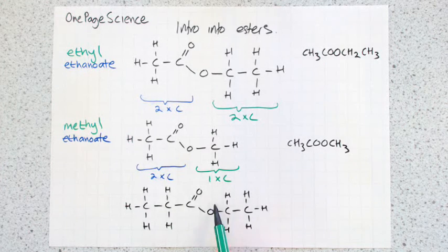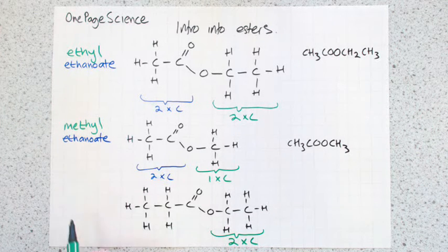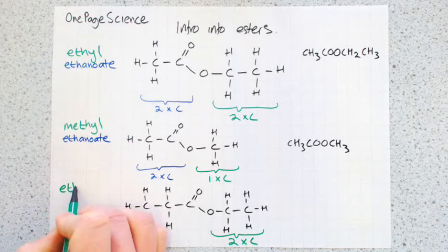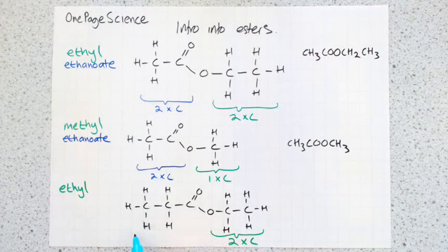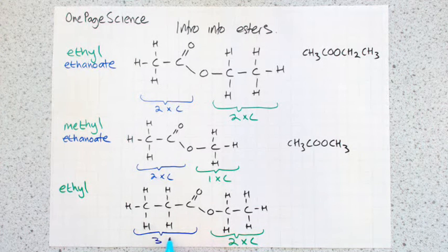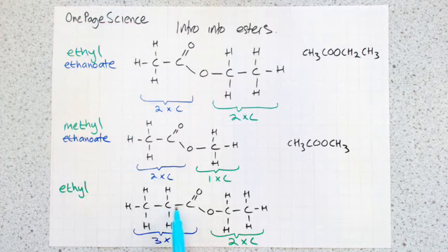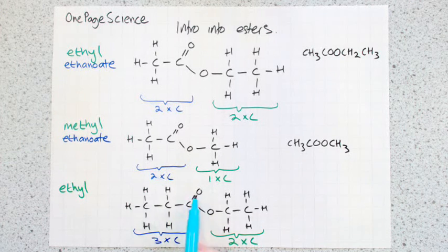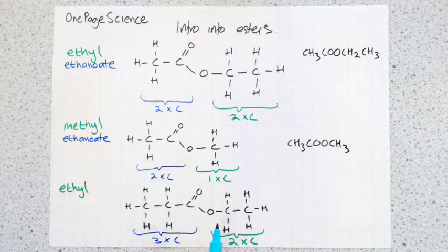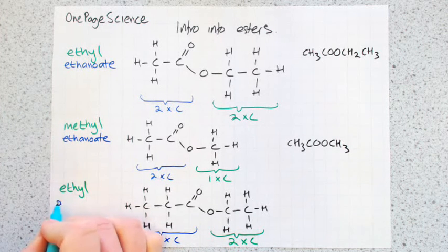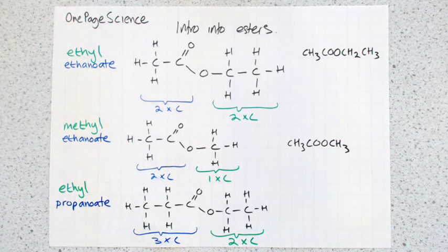And then number of carbons on the right-hand side is two. We've got two carbons, so the first part of the name is ethyl. The left-hand side of the molecule this time, there are three carbons. You have to make sure to count this carbon here. A lot of people think that that's two carbons, and this is part of the ester. But the way you name it is that you treat that as being one carbon chain.